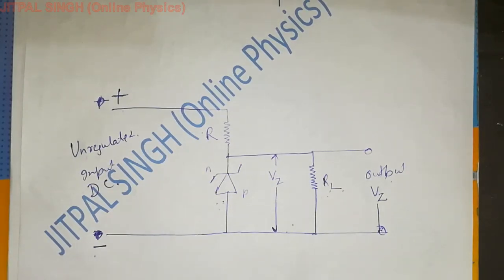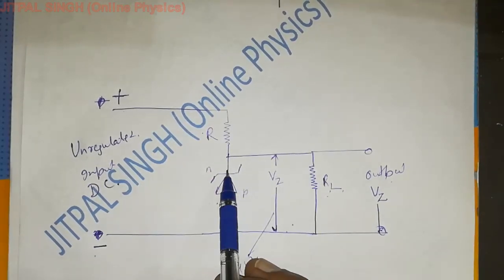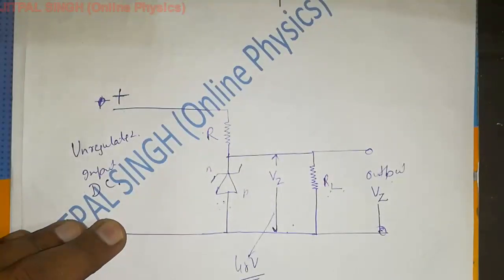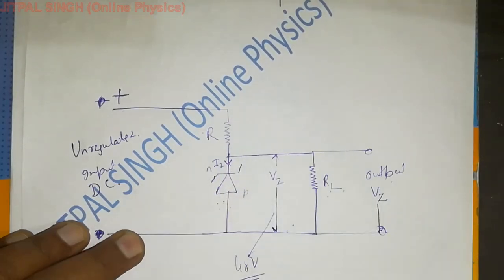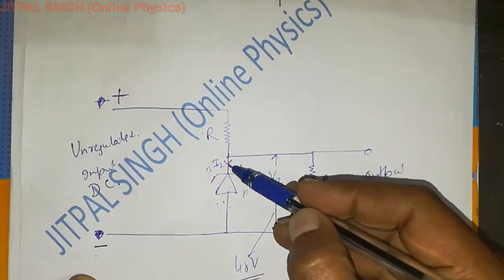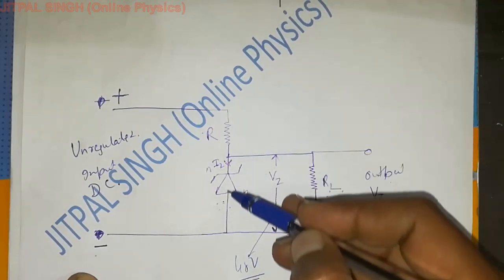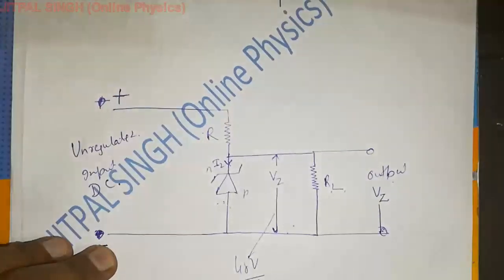Suppose voltage becomes 42. Input becomes 42. Unregulated input becomes 42. Current came and reached here. Now supply has become 42. And this Vz that we installed, suppose it was 40 volt. Now Zener diode will become active. So far it was not allowing current to pass through. But now Zener diode will also pass current through itself. As it becomes 42, current will go from here. Iz.